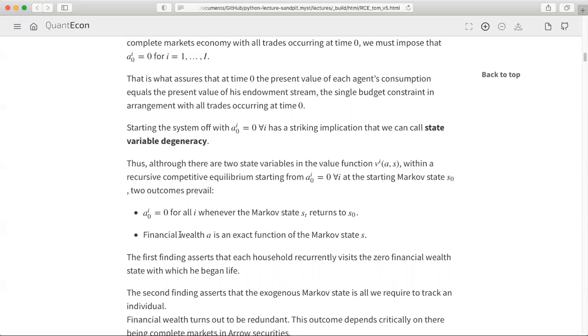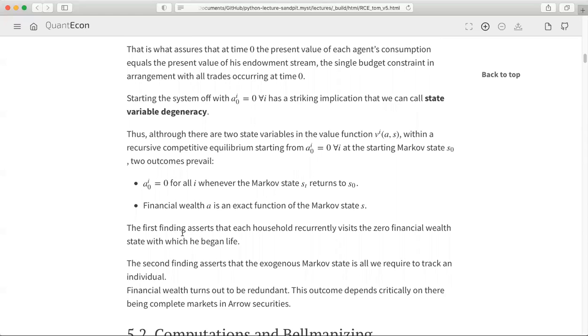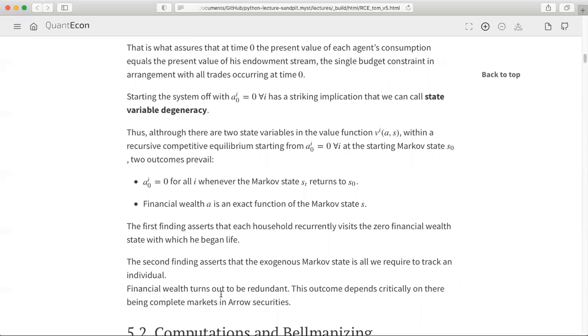The other thing is that in this recursive competitive equilibrium, financial wealth turns out to be an exact function of the Markov state. If you tell me the Markov state, I know your financial wealth in equilibrium. So this first finding says that each household recurrently visits the zero financial wealth state with which they began life. The second asserts that the exogenous Markov state is all we need to keep track of to understand the opportunities and state of an individual. So financial wealth turns out to be redundant.